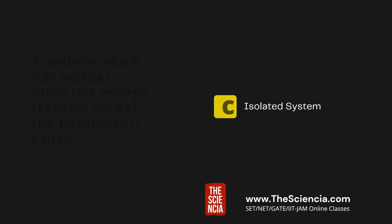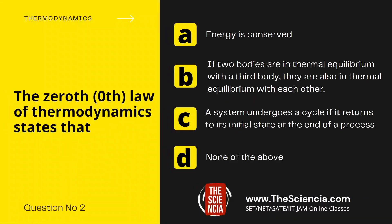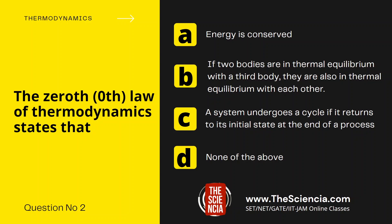Next question, that is question number 2. The zeroth law of thermodynamics states that — Option A, energy is conserved. Option B, if two bodies are in thermal equilibrium with a third body, they are also in thermal equilibrium with each other. And Option C, a system undergoes a cycle if it returns to its initial state at the end of the process.